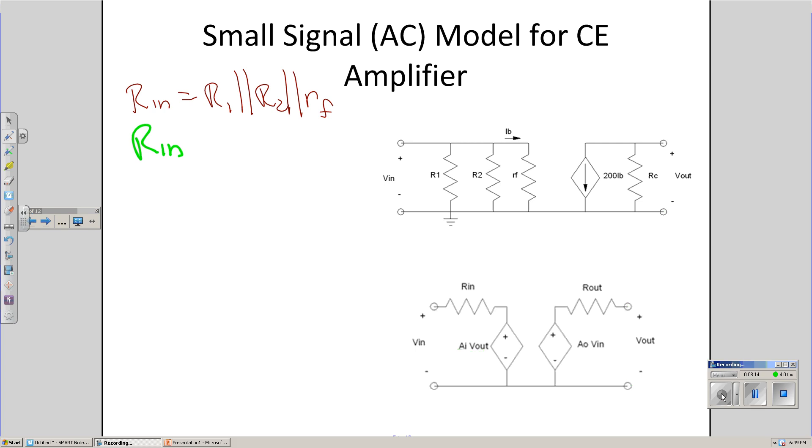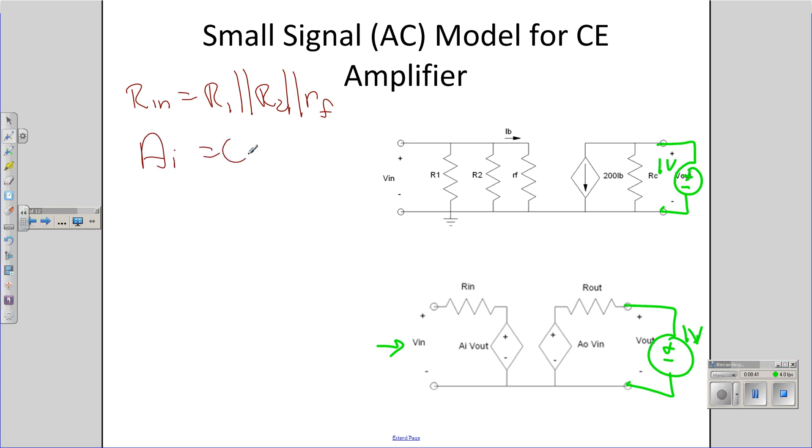Second test. Suppose I want to find AI. The way you find AI is take the output, tie it to one volt, measure the input voltage. That'll be AI. Let's do the same thing here. Let's take the output, tie it to one volt, measure the input voltage, and pretty clearly there's nothing there driving the circuit. I get AI equals zero.